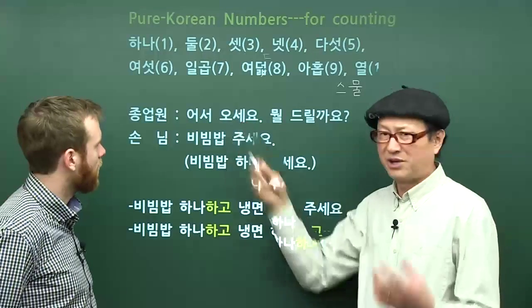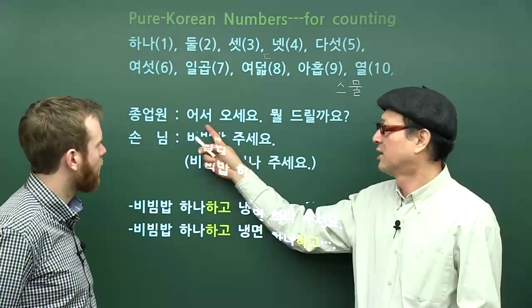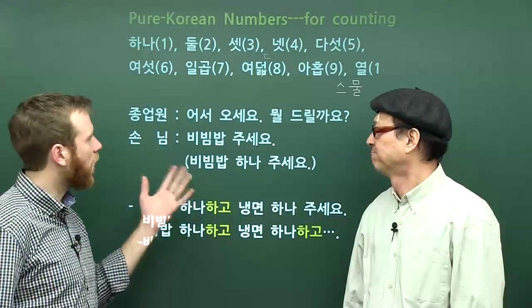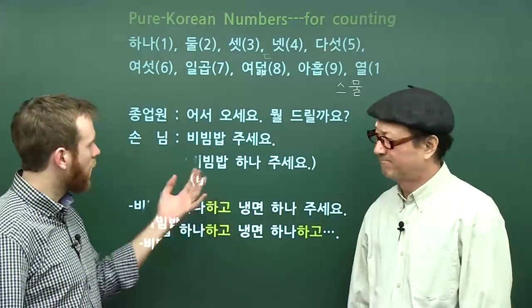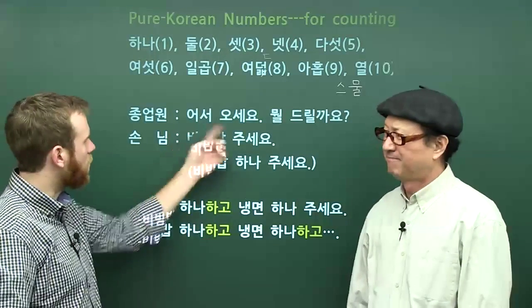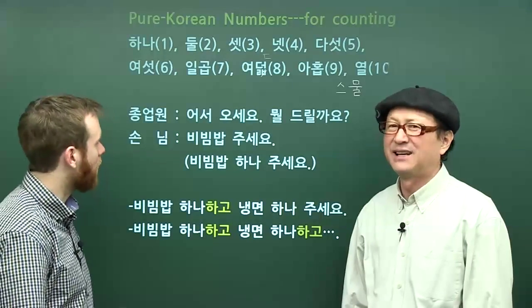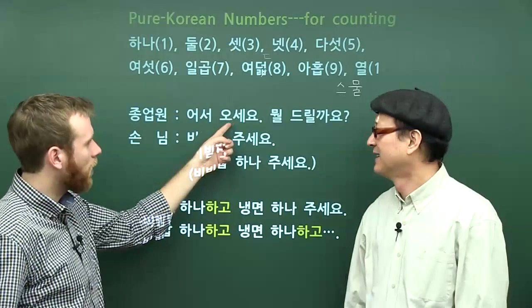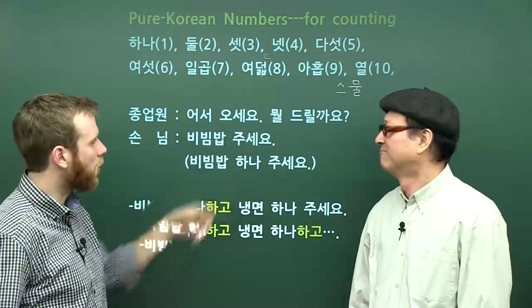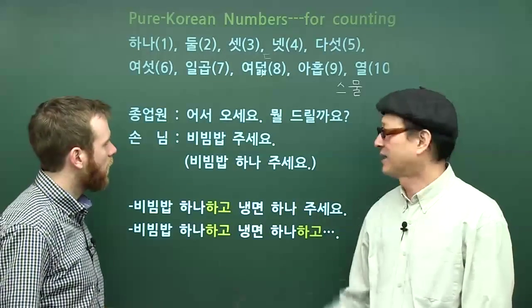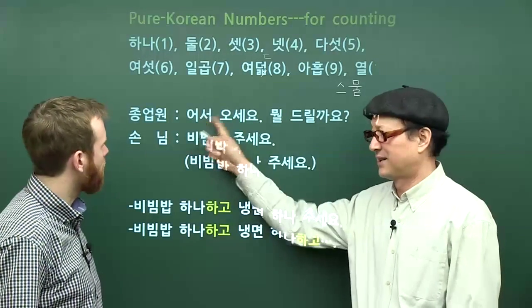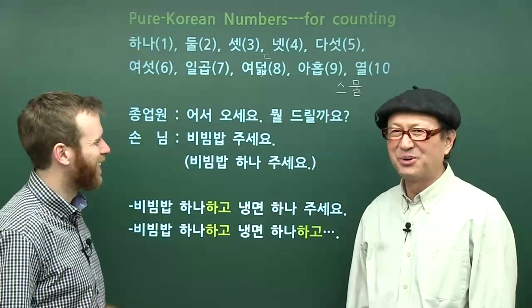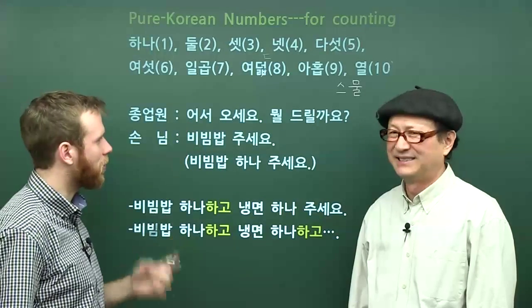세요 is another fixed sentence ending — the honorific form of the general verb. This is very common when you walk into a store or restaurant, or you'll see it written somewhere, maybe on the mat in front of a restaurant. It means 'come on in' — enthusiastically. 오다 is the verb 'to come,' and 오세요 is the honorific sentence ending. It's always 어서 오세요 — always paired together.